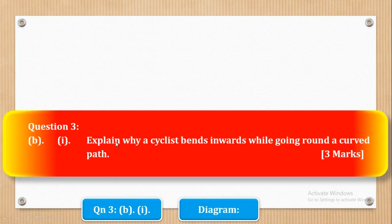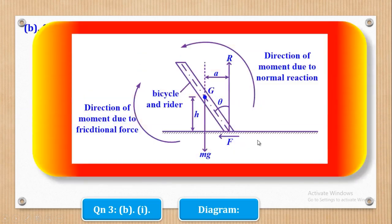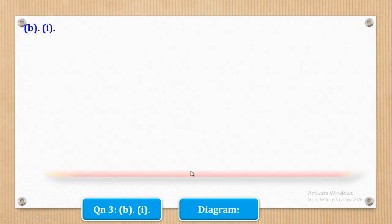Now we shall go to Part B, Roman 1, which says: explain why a cyclist bends inwards while going round a curved path, and that is 3 marks. So first of all, if this is the cyclist, while negotiating a certain corner he has to bend towards that very curve so that he can negotiate well. They want you to explain why he has to bend inwards, so let's see the explanation.